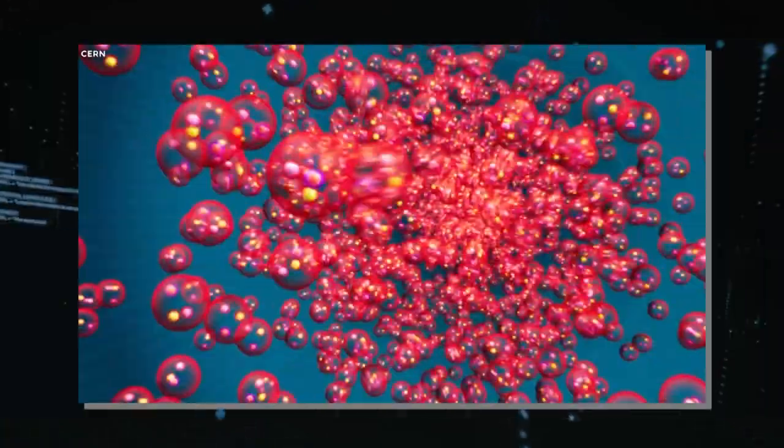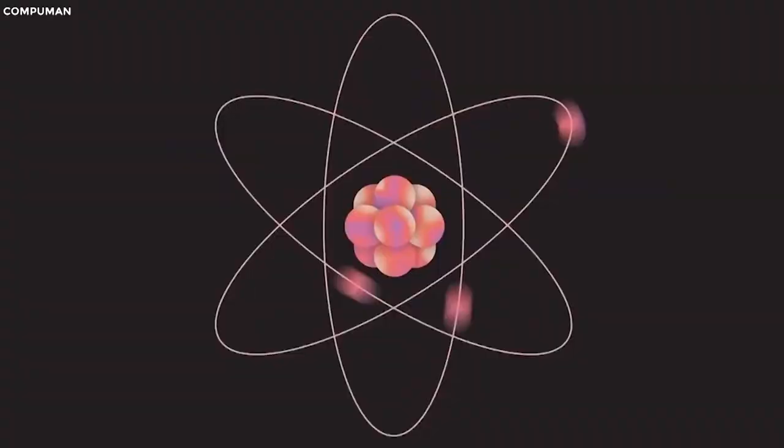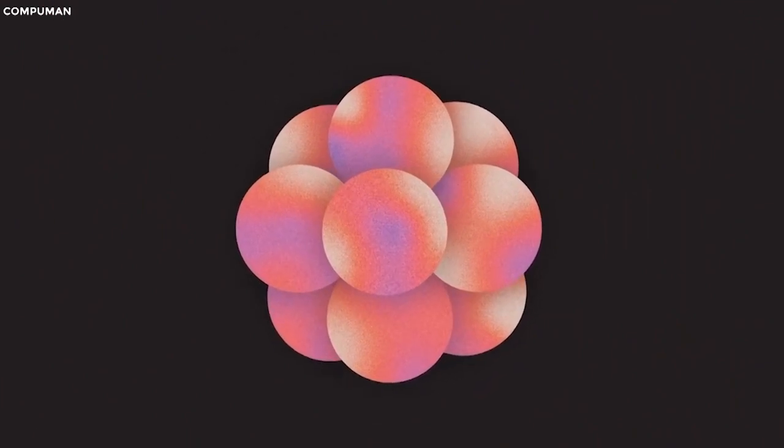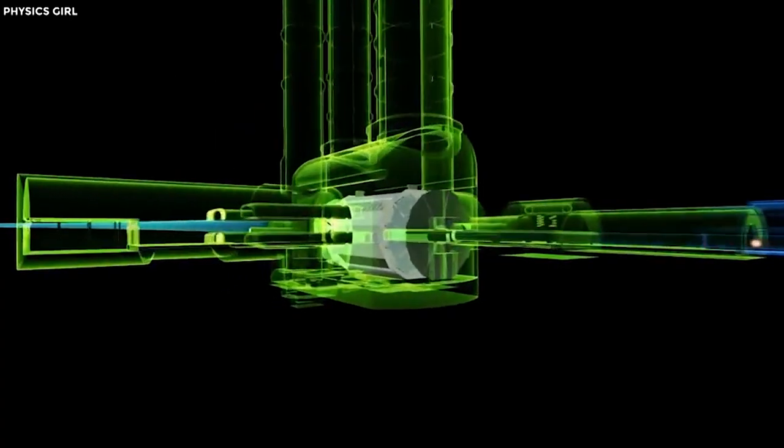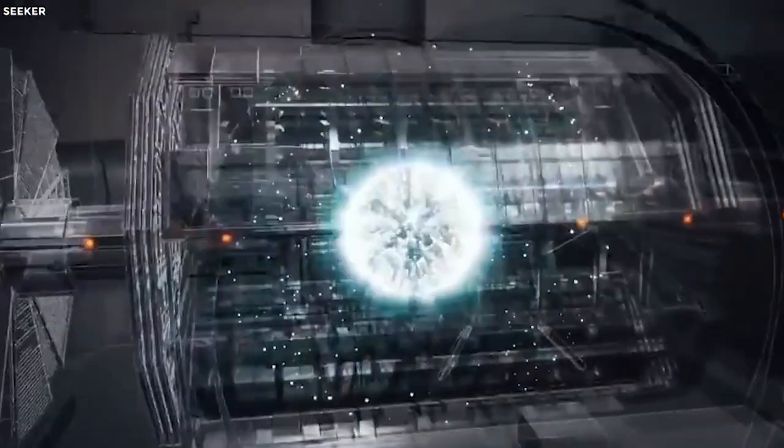Hadron is a term that groups together composite particles like protons, which are made up of tinier building blocks called quarks. And collider means that two particle beams race towards each other in opposite directions, and when they collide, that's when the magic happens.